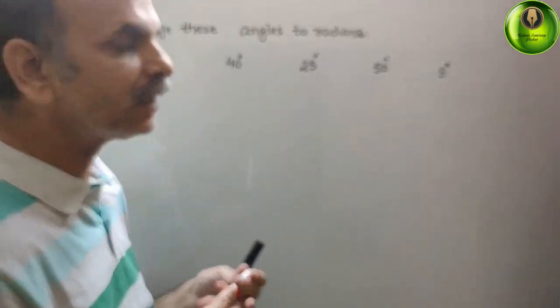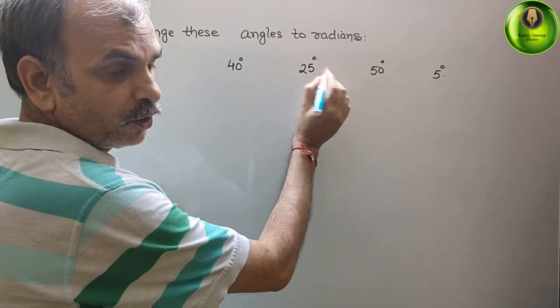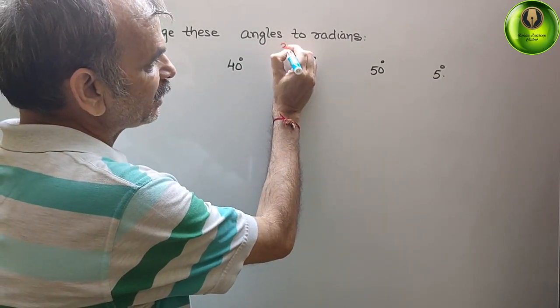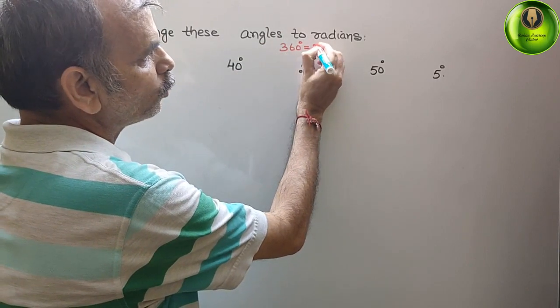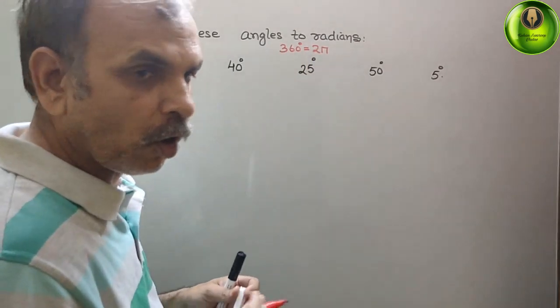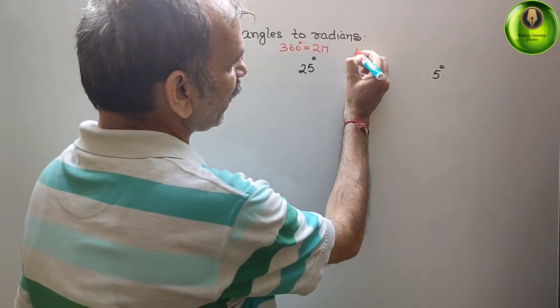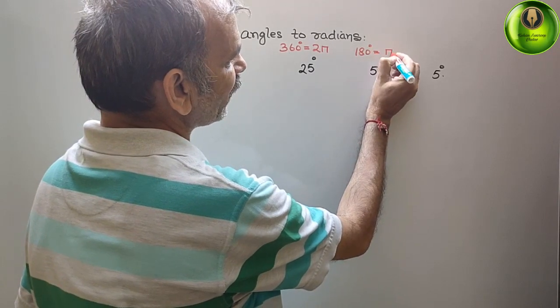So we know that, how we have to do it? We know that it is 360 degree, that is equal to 2π, that is in radians. Or we can say, it is 180 degree is equal to π radians.